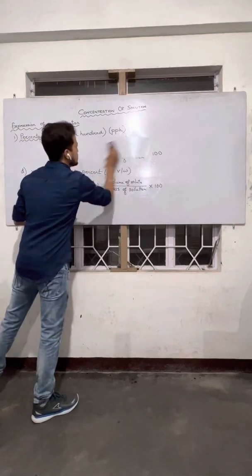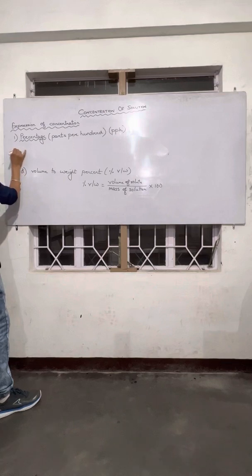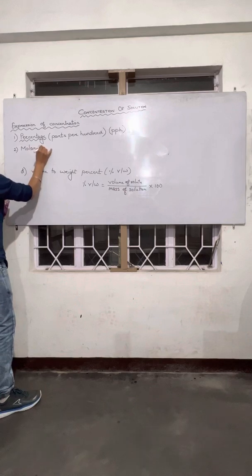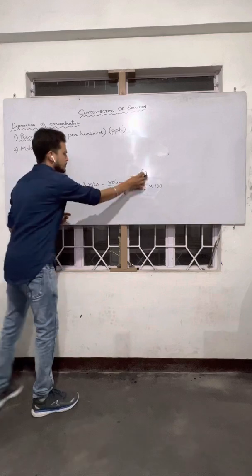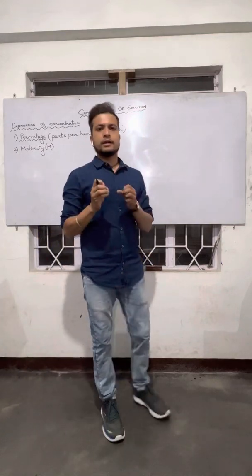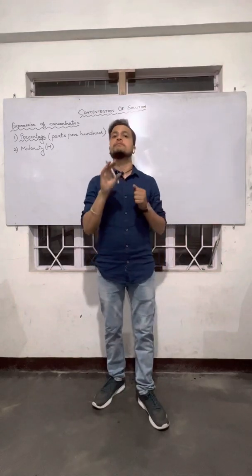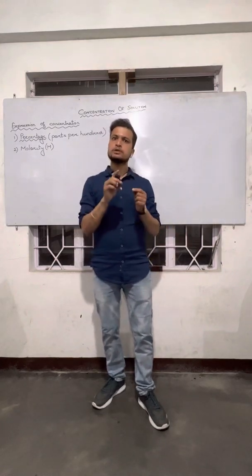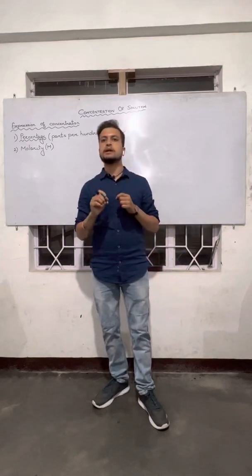We can express concentration in a second way, which is very common, and that is molarity, expressed as M. So what basically is molarity? Molarity is a way of expressing the solute in terms of number of moles. When solute is expressed in number of moles and solution is expressed in liters, the ratio you get is molarity.